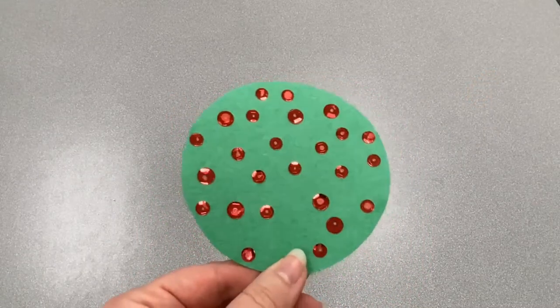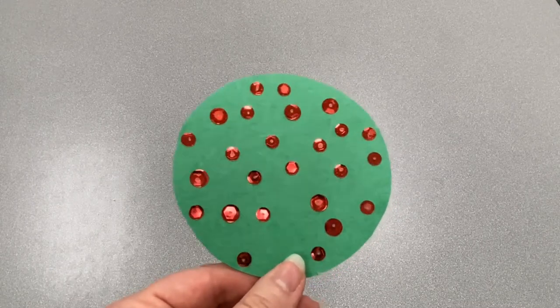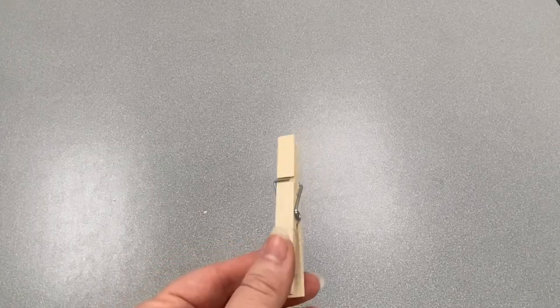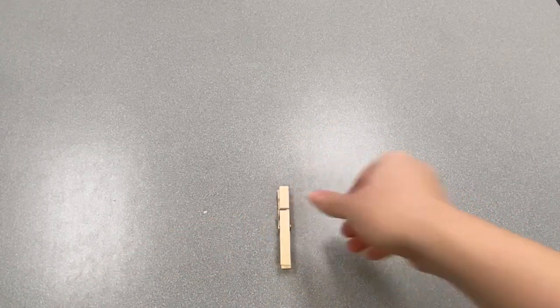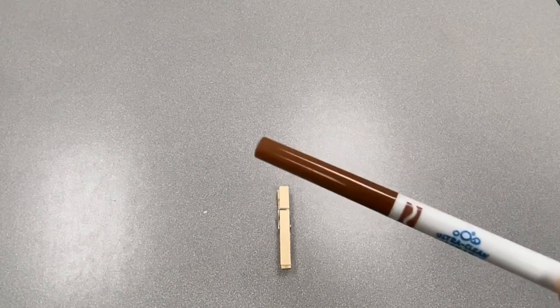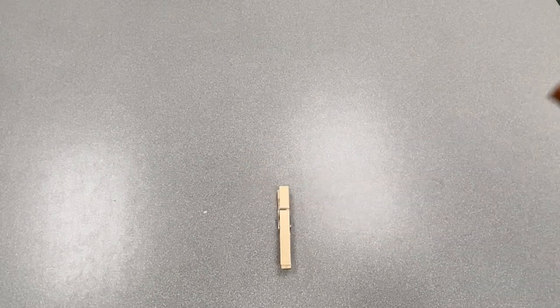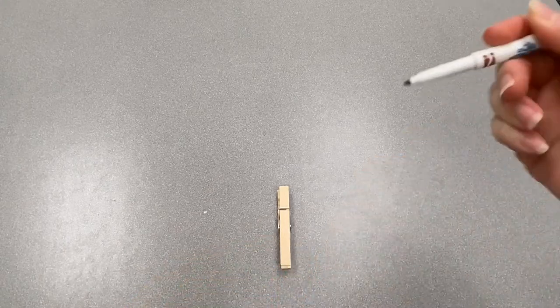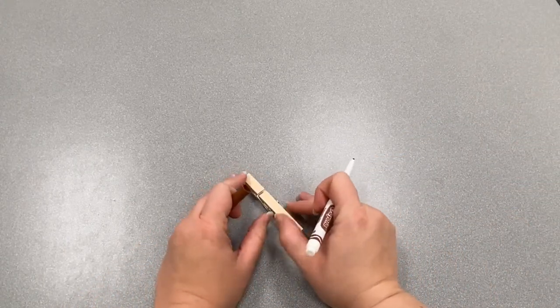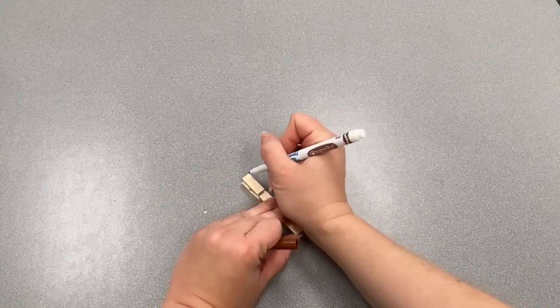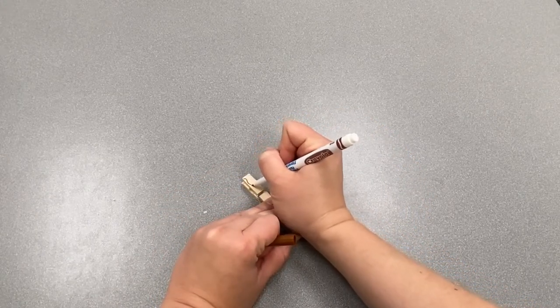Now that we've added all the apples to our tree, we're going to work on the trunk, which is the clothespin. We're going to decorate our clothespin with some bark. We're going to use our brown marker to draw some little lines to make it look like our tree has bark. Turn it and start at the top, making some squiggly lines that look like bark.